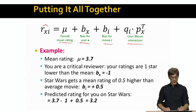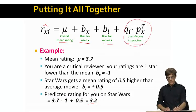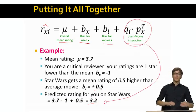You are a critical reviewer, so your b_x is minus 1. You are watching Star Wars, which is a really good movie that is rated half a star above the average. So now my predicted rating for you based on these biases is 3.2. And then we also include the interaction term to further up or down this rating.